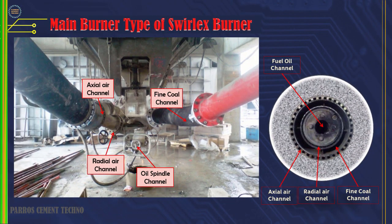This is the kiln main burner type, the Swirlex burner. This type of burner cannot change the primary air pressure because the axial nozzle gap is fixed, and can only go forward or backward between 0 to 15 mm, which does not affect the air pressure. For the operation of this burner, adjust the axial air valve opening 65 to 70% and radial or swirl air 30 to 35%.